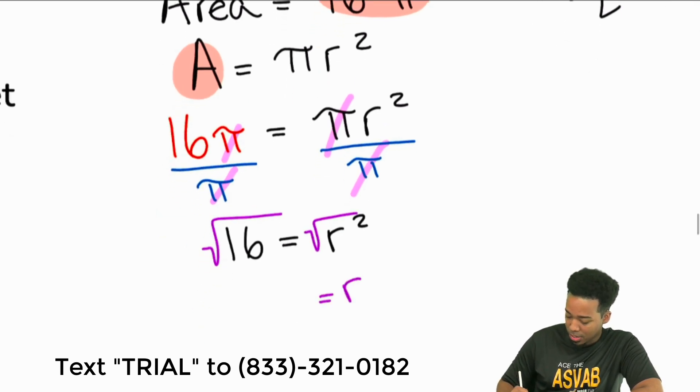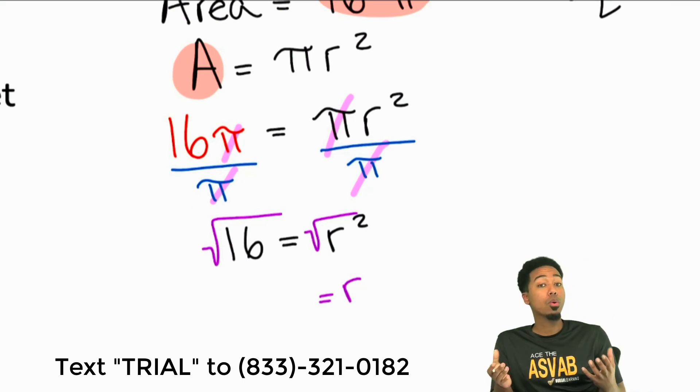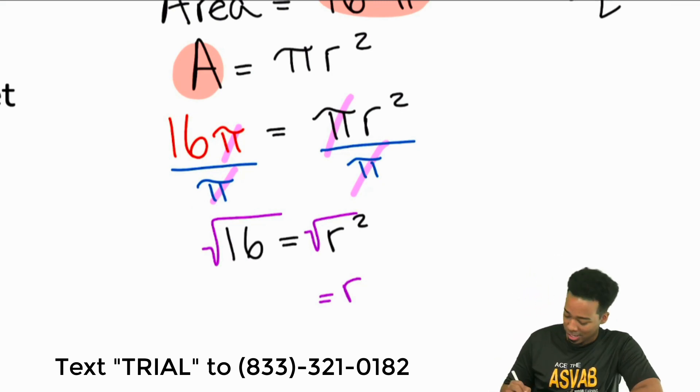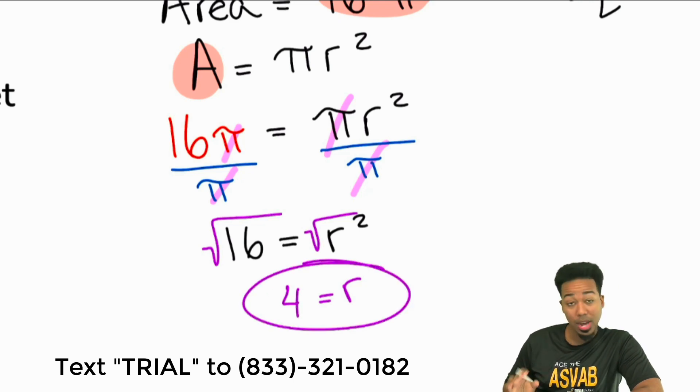And then we have r equals what? Now remember the square root means what number times itself gives you 16. 4 times 4. 4 times 4 gives me 16. So the square root of 16 is 4. And that's my radius.